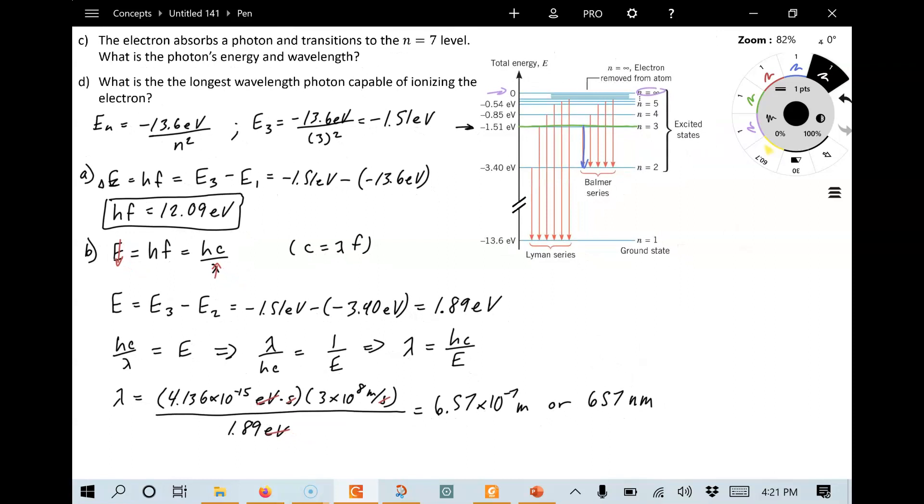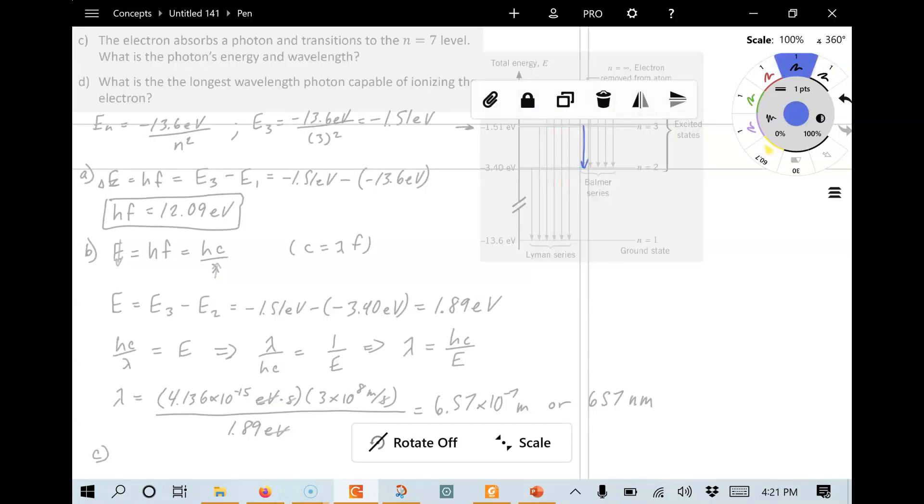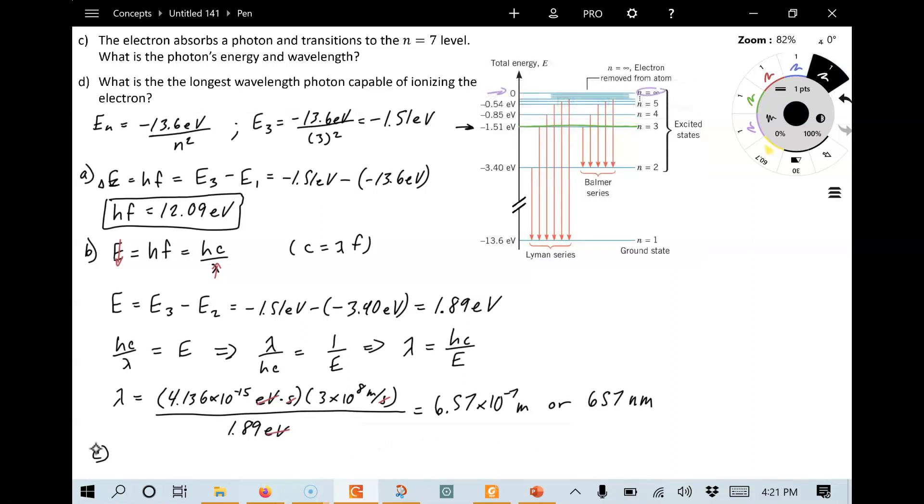So for part C, C asks us, the electron absorbs a photon and transitions to the n equals 7 level. What is the photon's energy and wavelength? So in this case, we're going to go from n equals 3 to n equals 7. And so n equals 7, that's one of these up here. Notice how when you get the larger n, they all start to bunch up because of the equation's 1 divided by n squared. Now all we got to do is take the difference. Again, this is an absorption. The electron's gaining energy and therefore it absorbs the photon to go up to a higher level. But we still calculate the energy the same way as before.